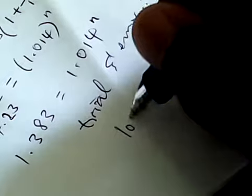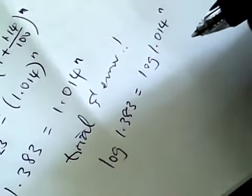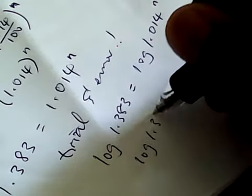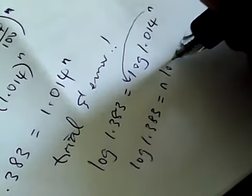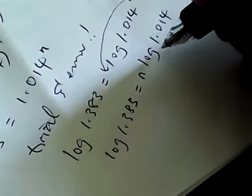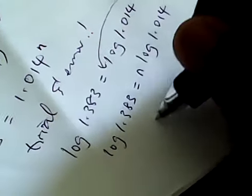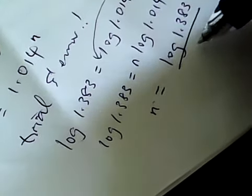You can put log here. Log 1.383 is equal to log 1.014 to the power of N. So you just put log on both sides. Now what log means is, this would be log 1.383 is equal to, so it drops down the N. What log does is, it drops N so that it looks like N times log 1.014. Then it means N, you divide both sides by log 1.014. So the answer will be N is equal to log 1.383 over log 1.014.